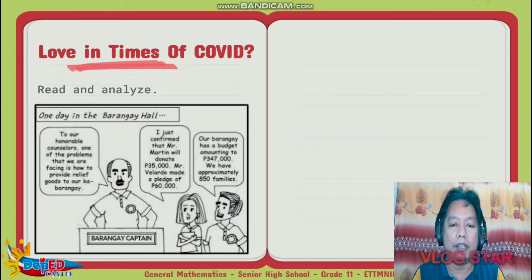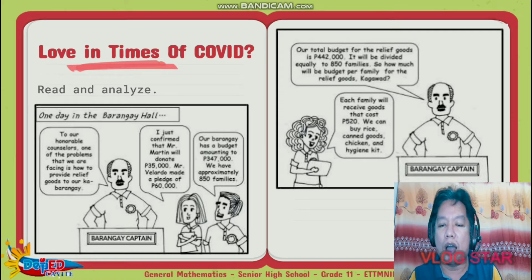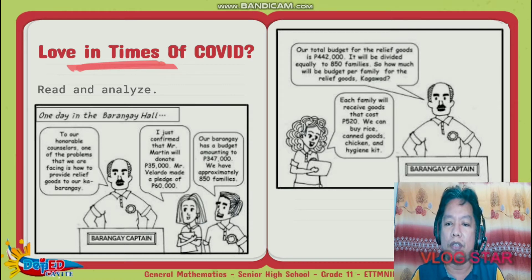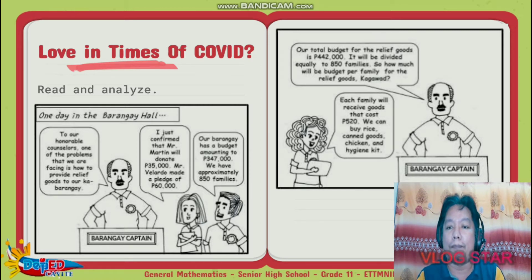The total donations amount to 442,000 pesos and it will be divided equally among 850 families. So how much will be the budget per family for the relief goods? Each family will receive goods that cost 520 pesos — we can buy rice, canned goods, chicken, and hygiene kits. The 520 pesos came from the total amount of 442,000 divided by approximately 800 families, giving 520 pesos.